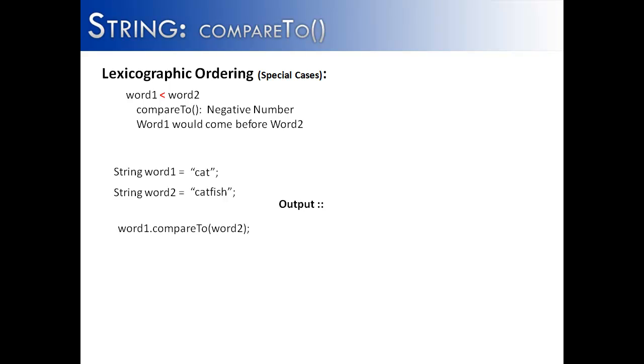The next one is cat versus catfish. You can probably guess that cat is going to come before catfish. But what is it going to return? It's going to return a negative four and let me tell you why. It compares C, A, and then T. And then it finds out I can't make any more comparisons because the first word is done. So what it does is it says, I'm going to look at the longer word. The longer word is, of course, catfish.